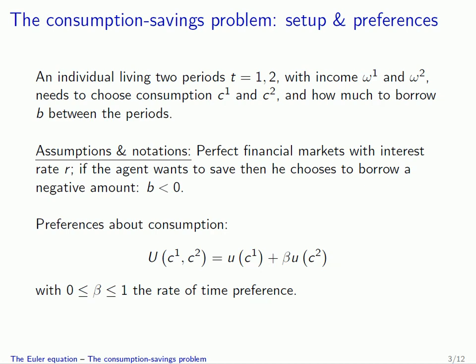The individual has the following preferences about consumption. The intertemporal utility U, which depends on both consumption in period 1 and period 2, is equal to the single period utility u(C1) plus beta times u(C2), with beta between 0 and 1, called the rate of time preference. The fact that beta is smaller than 1 reflects that you would rather have your consumption now in period 1 compared to having consumption in the future in period 2.